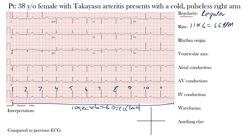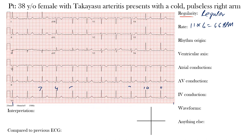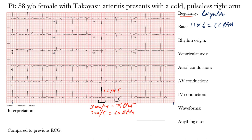There's another way to calculate the rate for a regular rhythm. Find a tall R wave that falls on a thick line — take this QRS complex where the R wave falls on that line — then find the next R wave and count the thick lines between them: one, two, three, four, five. So it's between four and five. 300 divided by 4 is 75 bpm, and 300 divided by 5 is 60 bpm. Our rate is somewhere between 60 and 75 bpm — the machine estimated 66 bpm, confirming our earlier calculation. So we have a normal rate and a regular rhythm.